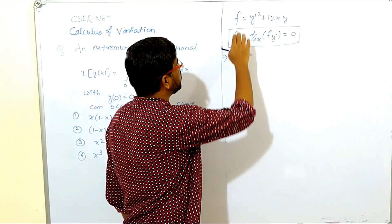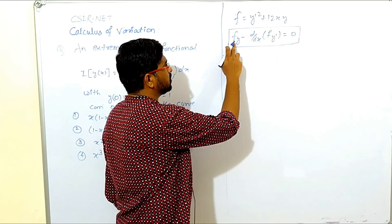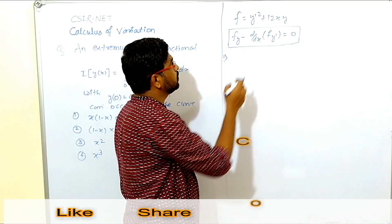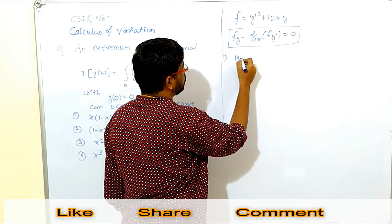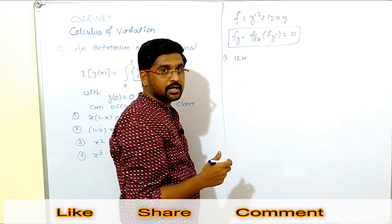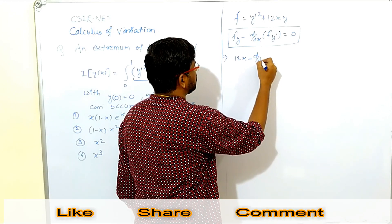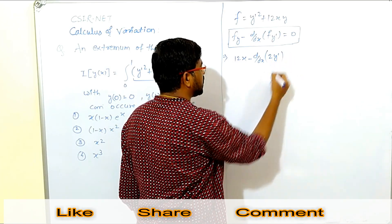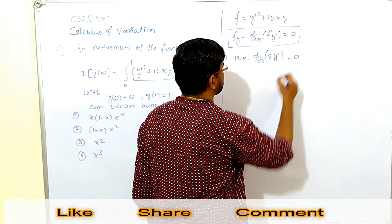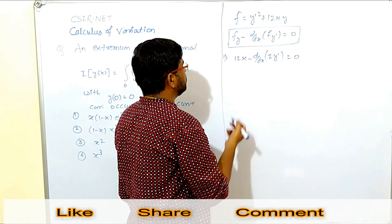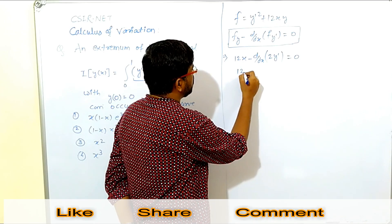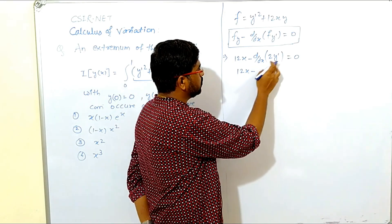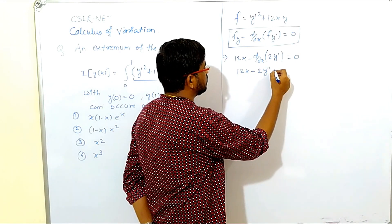Now, f equals y' squared plus 12xy. So f_y, the partial derivative of f with respect to y, treating y' as constant, is 12x. Then d/dx of f_{y'}: the partial derivative with respect to y' gives 2y'. So we have 12x minus d/dx(2y') equals 0, which gives 12x minus 2y'' equals 0.